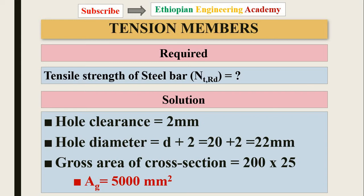The required result is the tensile strength of the steel bar. From the standard tables, the hole clearance for a 20 mm diameter bolt — which falls between 14 mm and 22 mm diameter — is 2 mm. So the hole diameter is 20 + 2 = 22 mm. The gross area of the cross section equals 200 × 25 = 5000 mm².